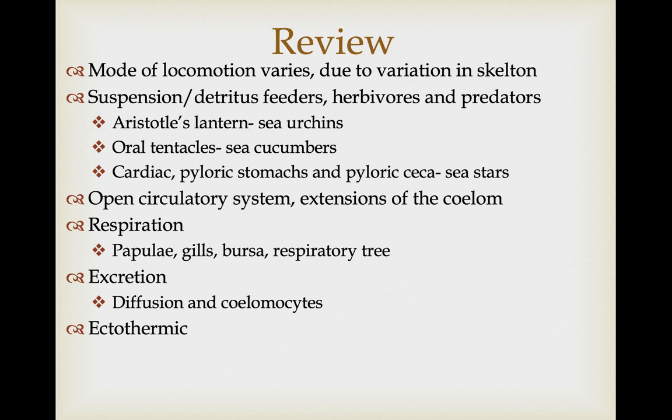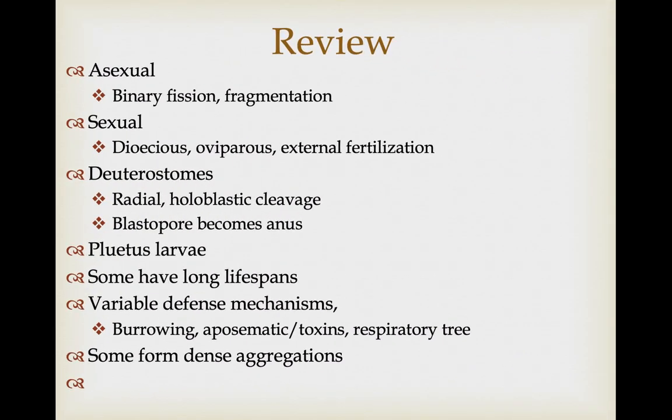They have a relatively simple open circulatory system with extensions of the coelom and ciliary action to move fluid. Gas exchange structures include papulae, gills in some cases, internal bursae, and the respiratory tree in sea cucumbers. Excretion is largely by diffusion, but coelomocytes can capture solid nitrogenous waste in the coelom and move it to the epidermis. They are ectothermic. They show asexual reproduction through binary fission and fragmentation — a benefit of their decentralized body plan. Sexual reproduction is dioecious and typically oviparous with external fertilization. As our first deuterostomes, they show radial holoblastic cleavage with the blastopore becoming the anus.